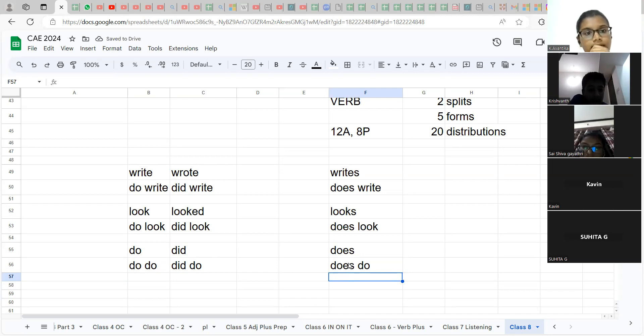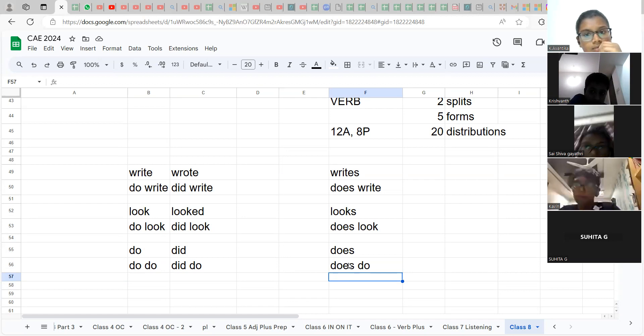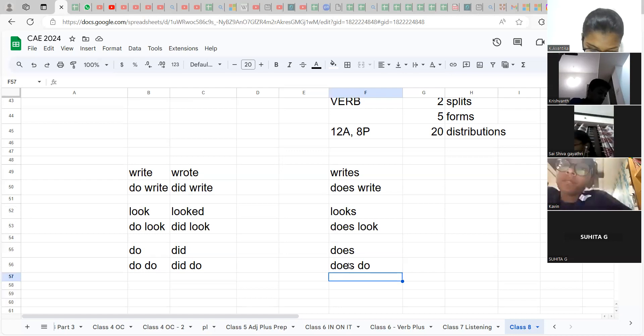Besides, you are going to read the question. When you actually answered the very first question. Does he sleep? Does he. Do you remember? Sleep? Write it down. Quickly write this down. Always remember, your verb can be split into 2. Can have 5 forms. Can be distributed into 20 different situations. Quickly write this down. Let's go back.